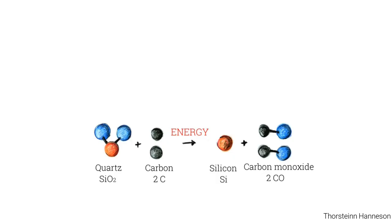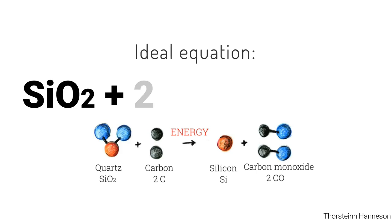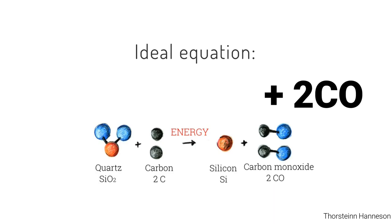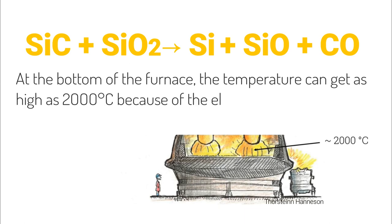The simplified equation of the silicon production process shows silicon dioxide reacting with carbon to produce silicon, which will be tapped from the furnace, and carbon monoxide gas that will ascend through the materials in the furnace. There are, however, two important species that will also be present in the furnace: silicon carbide and silicon monoxide gas.